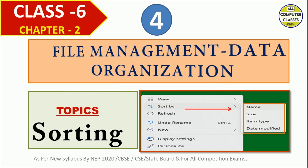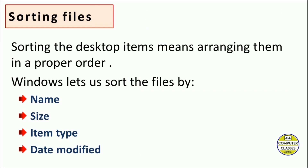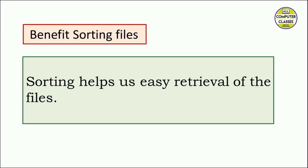What is sorting? Sorting the desktop items means arranging them in a proper order. You can apply sorting not only to desktop items but to any folder. Windows lets us sort files in four ways: name, size, item type, and date on which it was modified.